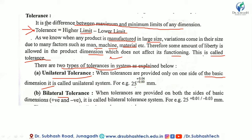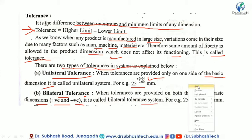This is called unilateral tolerance. When tolerance is provided on both sides of the basic dimension - both positive and negative - it is called bilateral tolerance. For example: 25 raised to +0.01 and -0.03 represents bilateral tolerance.